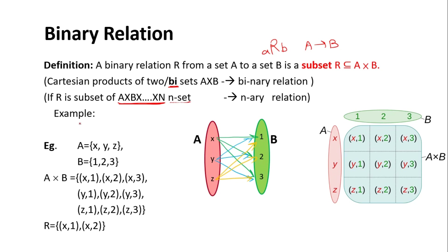For example, using the same sets A={X,Y,Z} and B={1,2,3} with their Cartesian product, we can say a small subset — for instance only two elements — can form my relation.